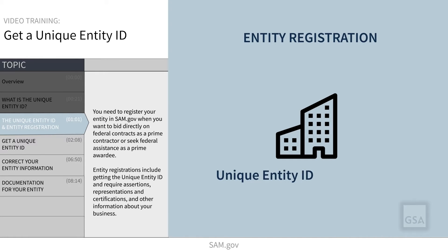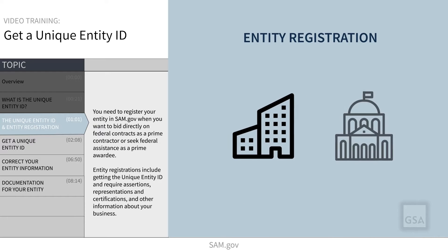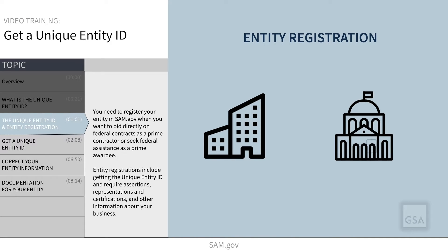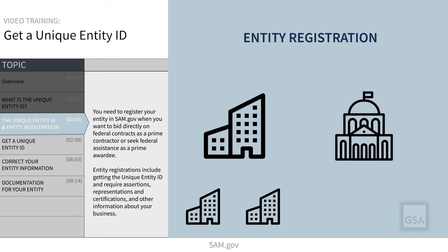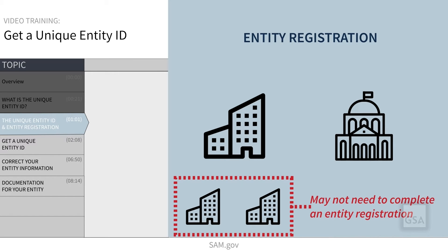Entity registrations include getting the Unique Entity ID and require assertions, representations and certifications, and other information about your business. Some organizations that do business with the federal government, such as sub-awardees, do not directly bid on contracts or apply for assistance and may not need to complete an entity registration. There may be other situations where a federal agency directs you to get a Unique Entity ID or to register in SAM.gov.